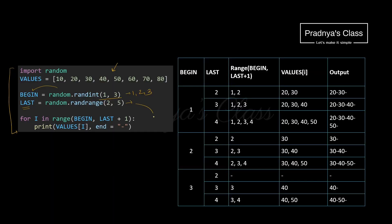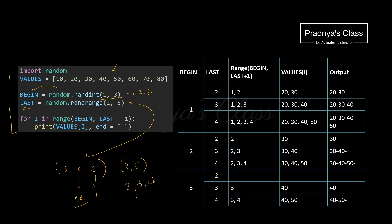The randrange function generally has three parameters: start, end, and step. If you don't mention step, it defaults to 1, and the end limit is exclusive. So if we write randrange(2, 5), it will generate numbers 2, 3, and 4. In this way, the values of 'last' will be 2, 3, 4. So values of 'beginning' will be 1, 2, 3 and values of 'last' will be 2, 3, 4.